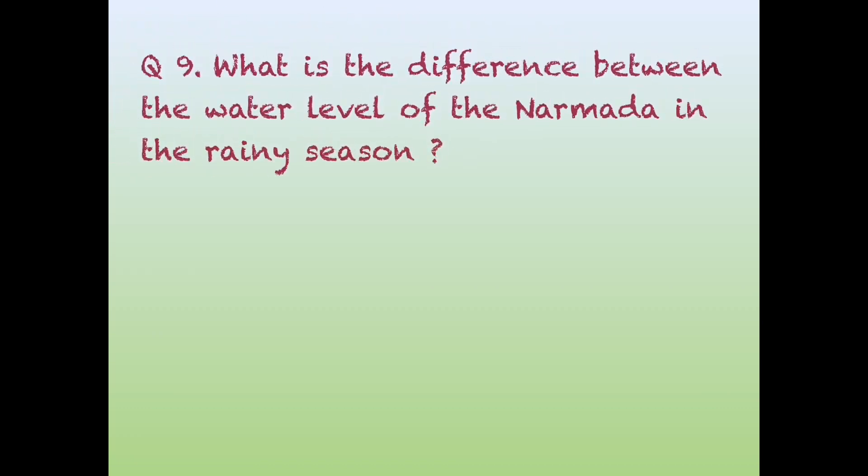Question Number 9: What is the difference between the water level of the Narmada in the rainy season and now? In the story, Mr. Rakesh was telling the water level now is quite low. It must be about 40 meters below the bridge. Miss Asha: 'But in the rainy season the water had risen; then it was just about 15 meters below the bridge.'